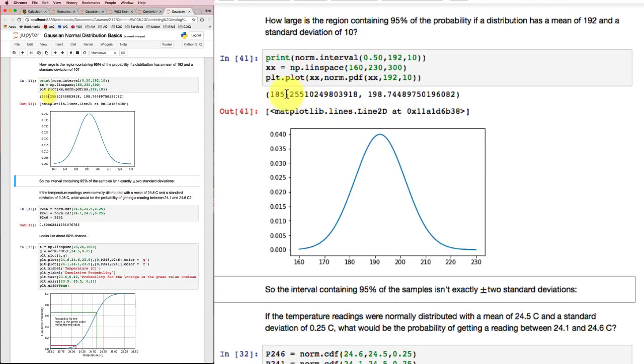Down about seven and up about seven. So about seven-tenths of a standard deviation away for 50%. Because one standard deviation would give us 68%. So that makes sense. So we can use this norm interval function to find out the region around the mean that contains a certain percentage.